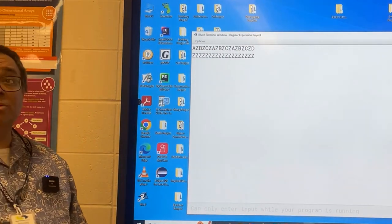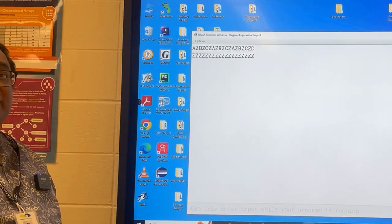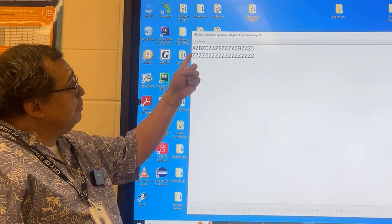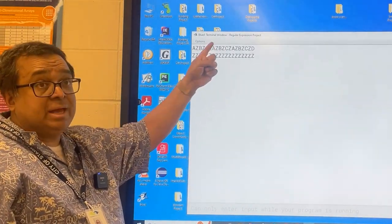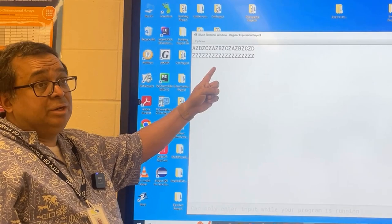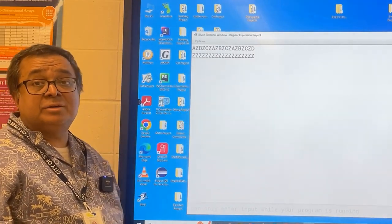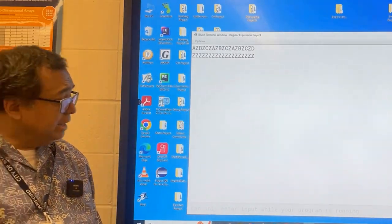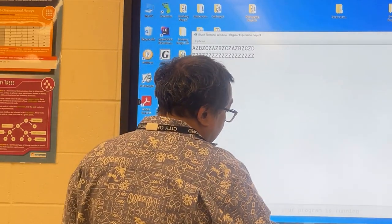And so now we can see that the first one took the periods that were here and changed them to capital Zs. And the second one took all the characters and changed them to capital Z. And so now we have to figure out why that happened.